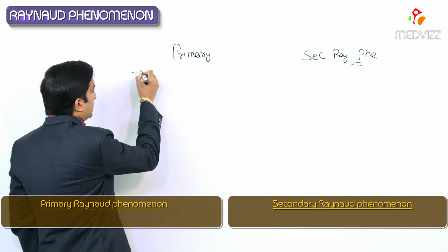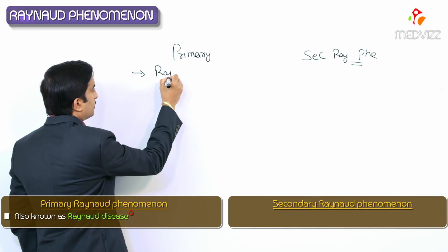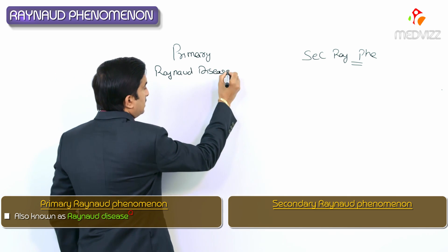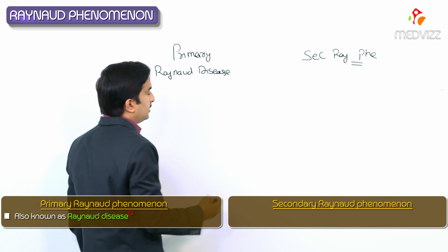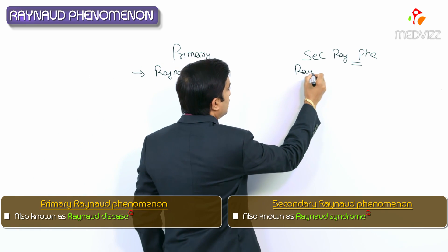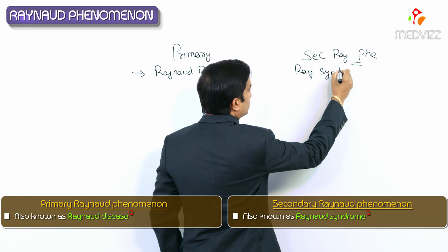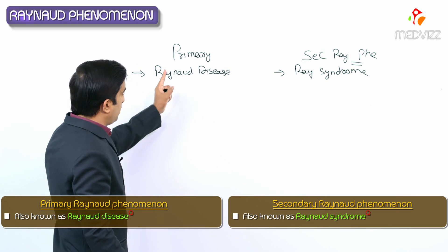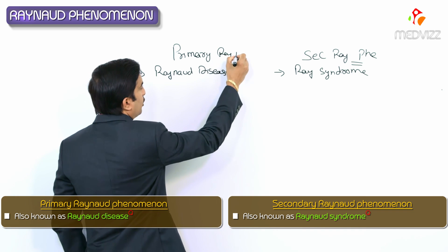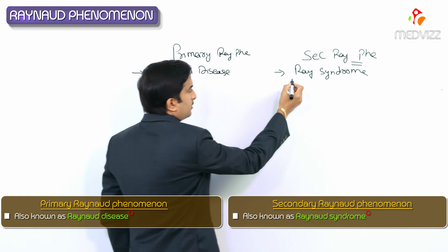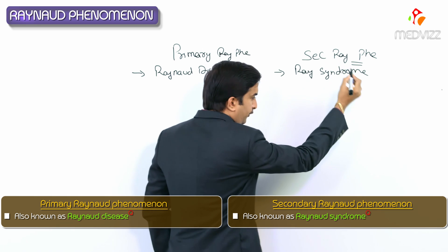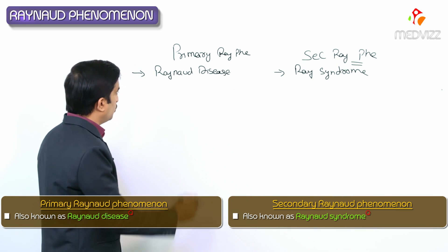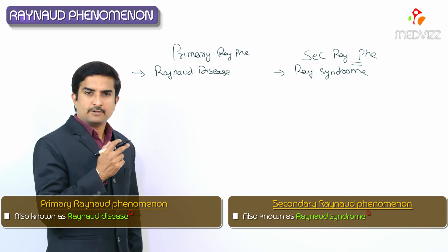Primary Raynaud's phenomena is also called Raynaud's disease, and secondary Raynaud's phenomena is called Raynaud's syndrome. Raynaud's disease means primary Raynaud's phenomena, and Raynaud's syndrome means secondary Raynaud's phenomena. These two categories are important to distinguish.